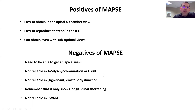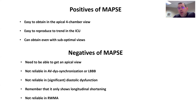The negatives: you can't get an apical four-chamber view in everybody — some patients may only allow a subcostal view, in which case MAPSE can't be used. It's also not reliable in AV dyssynchrony or left bundle branch block, and not reliable in significant diastolic dysfunction — particularly stage three and especially stage four.